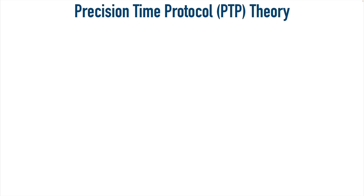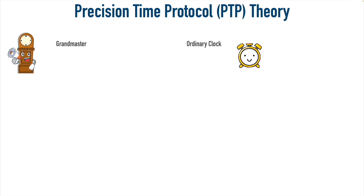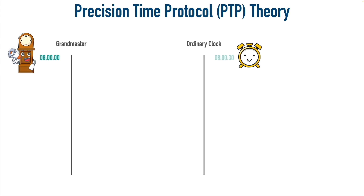Now that we have a basic idea of when we would use Precision Time Protocol, let's consider how synchronization happens. The authoritative time source for a PTP domain is called the Grand Master Clock, and it can push time out to an ordinary clock. Let's see how that ordinary clock can adjust its time to be in sync with the Grand Master Clock. Let's say the current time is 8 o'clock and 0 seconds — that's the official time according to the Grand Master. But the ordinary clock thinks the time is 8 o'clock and 30 seconds, so there is a 30-second offset.